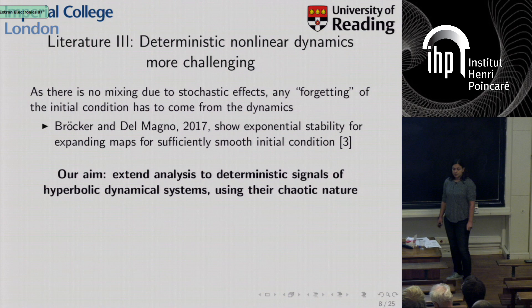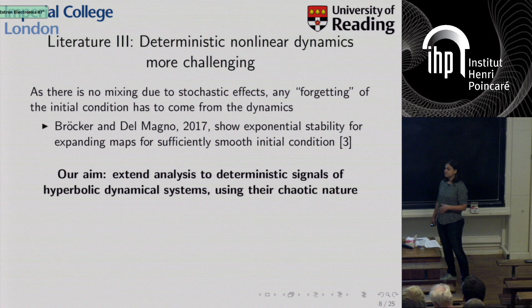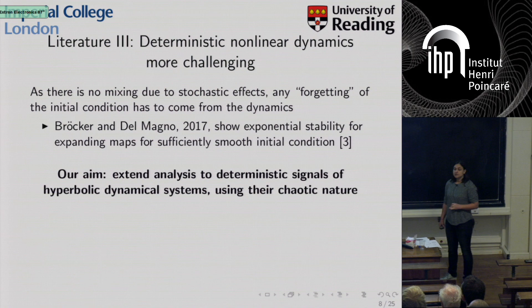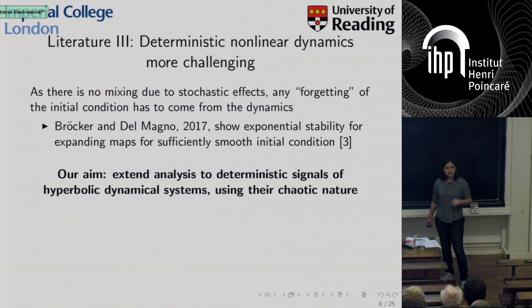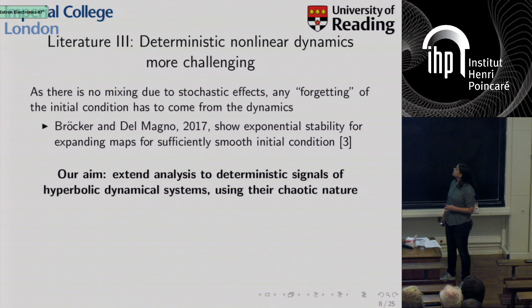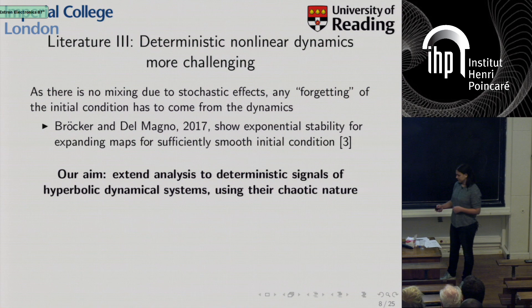There have been fewer results in the deterministic case. It is difficult to directly transfer the approach from random dynamics, since it relies on stochasticity and ergodicity due to stochasticity, so any forgetting must come from the dynamics themselves. In a 2017 paper, Broker and Del Magno were able to use the approach from random dynamics by exploiting the ergodic properties of expanding maps. We want to extend this analysis to where there is also a contracting direction — that is, to hyperbolic dynamical systems — and hope to use their known chaotic nature.